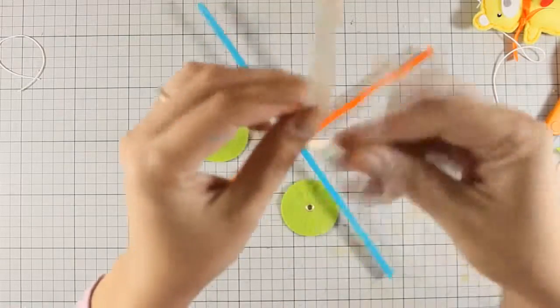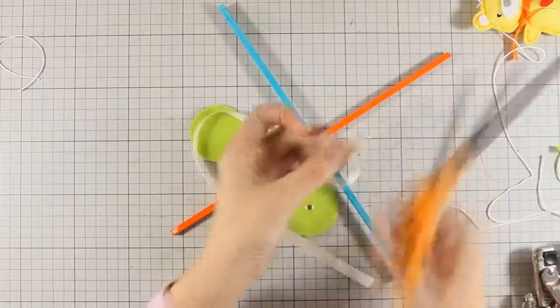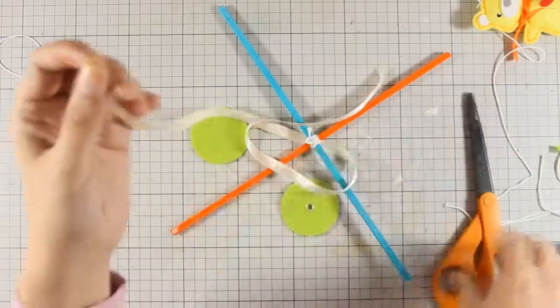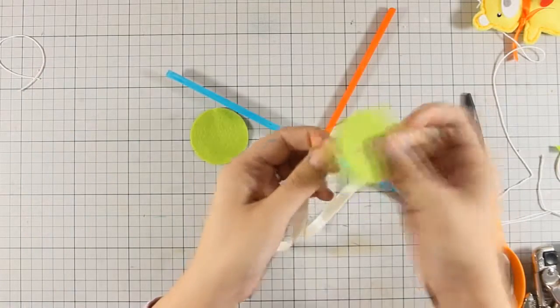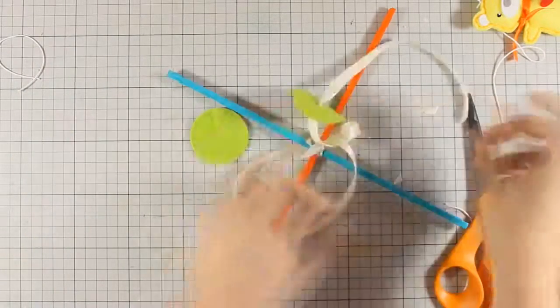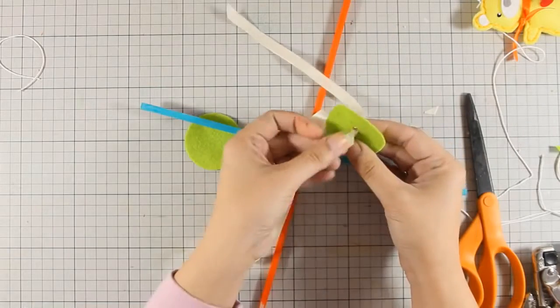I am using a piece of ribbon that I am going to thread through that hole on my felt, and this is where I will be able to hang my baby mobile from.